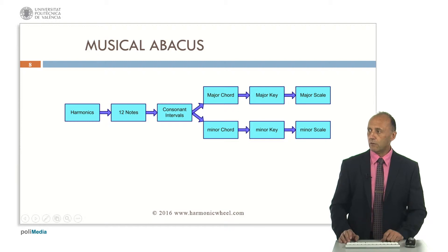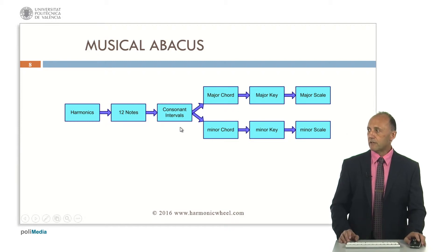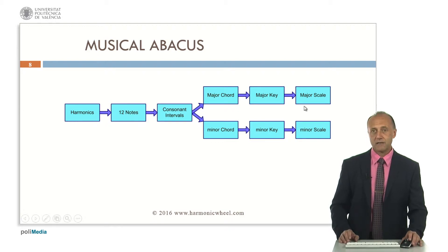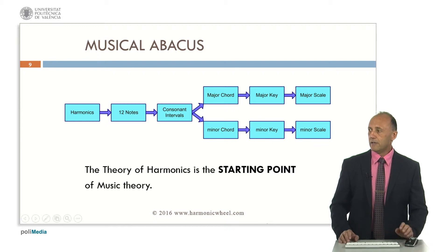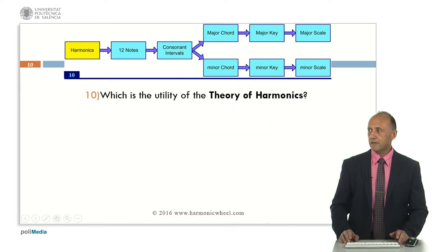To do it I will follow this diagram: first harmonics, then 12 notes, constant intervals, and then on the one hand the major chord, major key and major scale, and on the other hand minor chord, minor key and minor scale. This way the theory of harmonics is the starting point of music theory, which answers the question of what is the utility of the theory of harmonics.